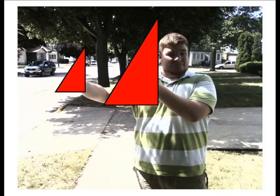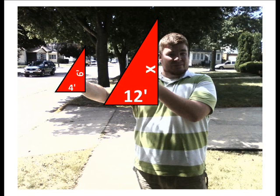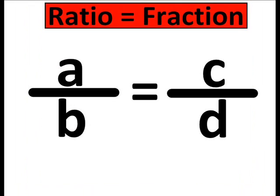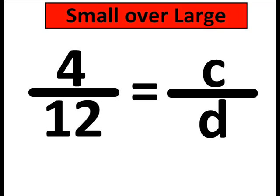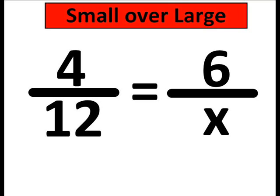So what if I have two similar triangles? I know the bases are 12 feet and 4 feet, and the height of the small triangle is 6. So let's find what the height of the other one is. For our ratios, let's put the small over the large. On the left we've got 4 over 12, and on the right, 6 over x.